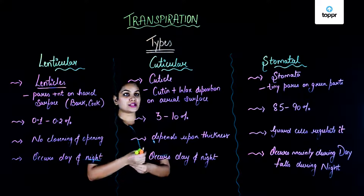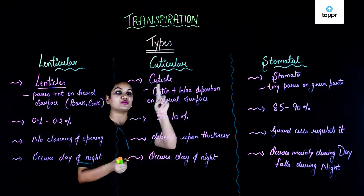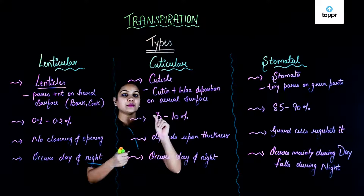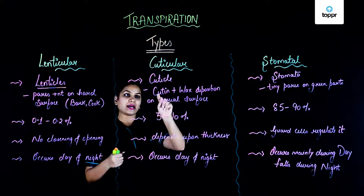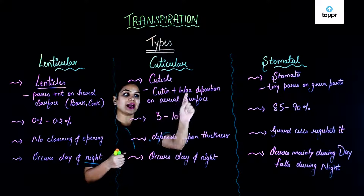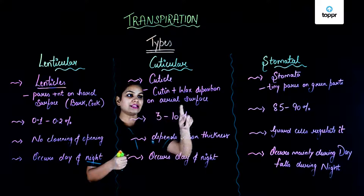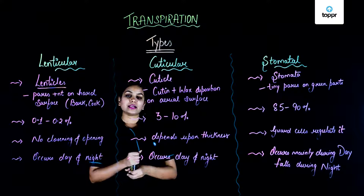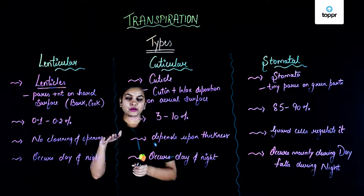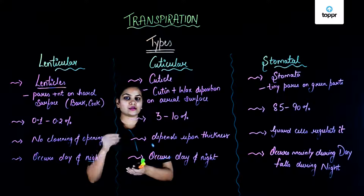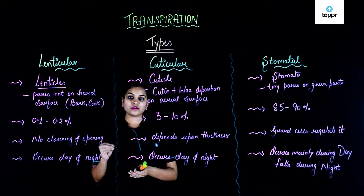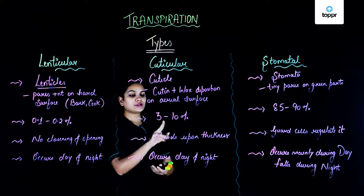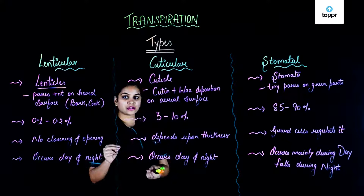Next is cuticular transpiration, which occurs with the help of the cuticle. The cuticle is a deposition formed by the combination of cutin and wax over the aerial surface — for example, the upper surface of the leaf. Transpiration occurs through this cuticle. The percentage of transpiration through cuticle is around 3 to 10% of total transpiration.